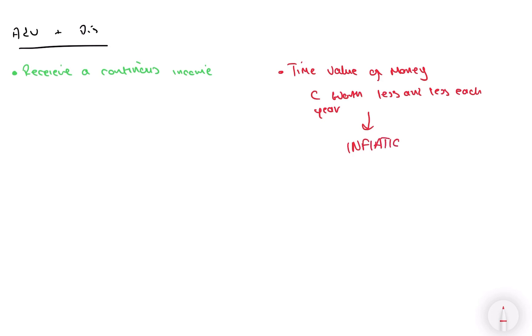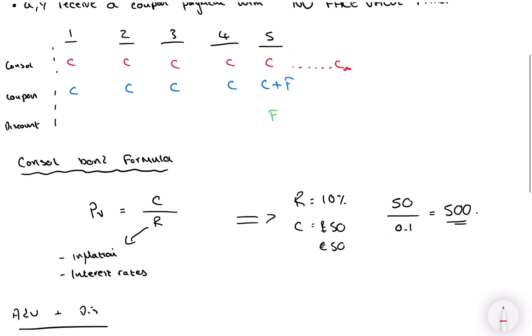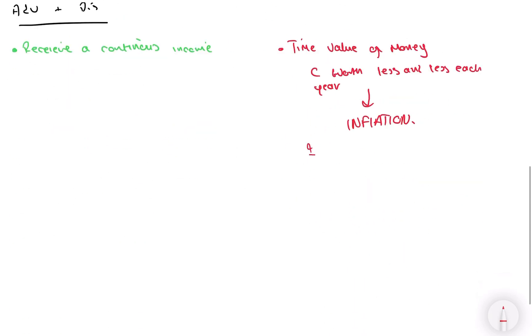And that's the downside of having a console bond, because it's going to go on forever. So let's say this £50, which is from the previous example, it's going to be worth less and less and less each year.